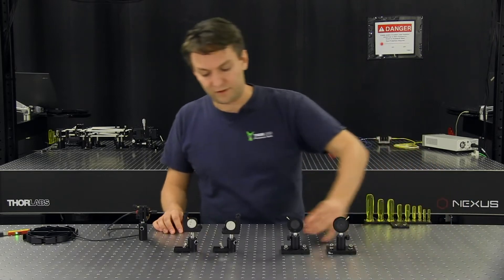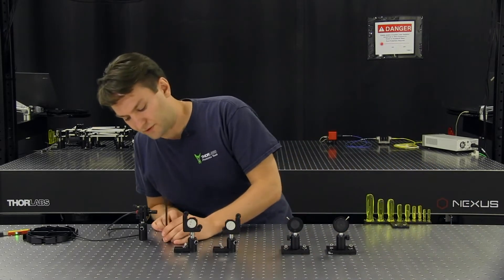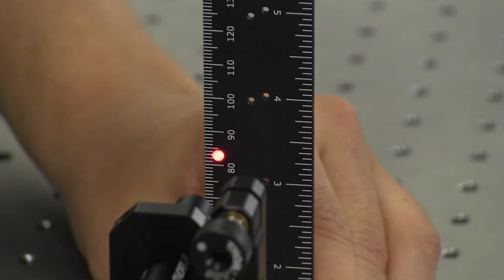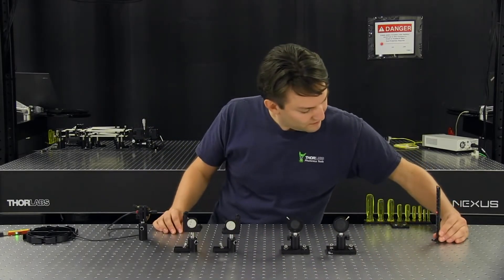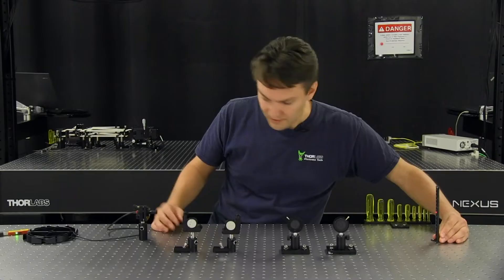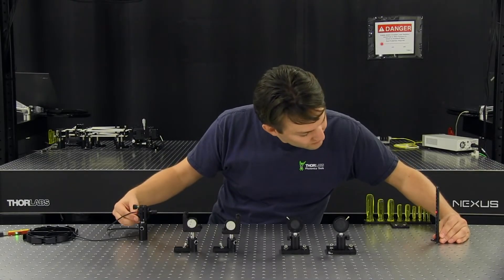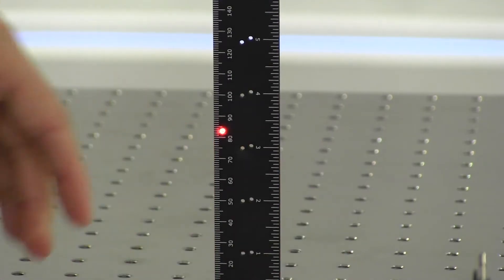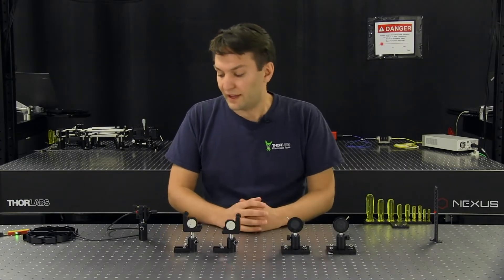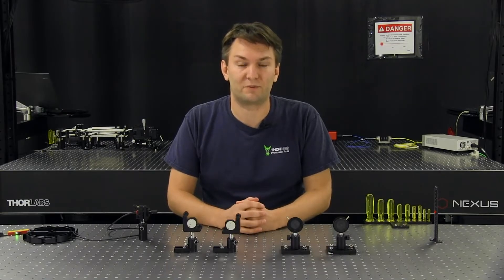So again, I've moved the device. So I'm going to come up close again. Take a look where I think it is. I'll make a slight tweak. Okay. So now I have my collimated laser diode package traveling in a straight line with respect to the table.